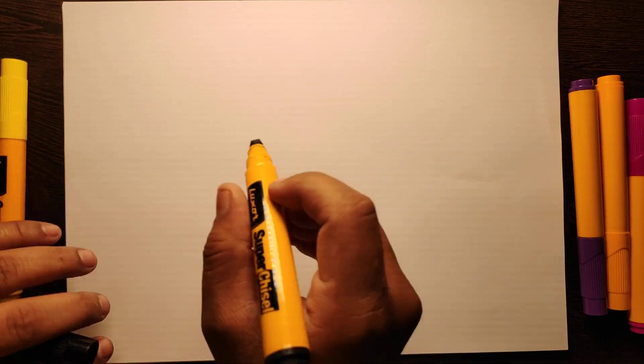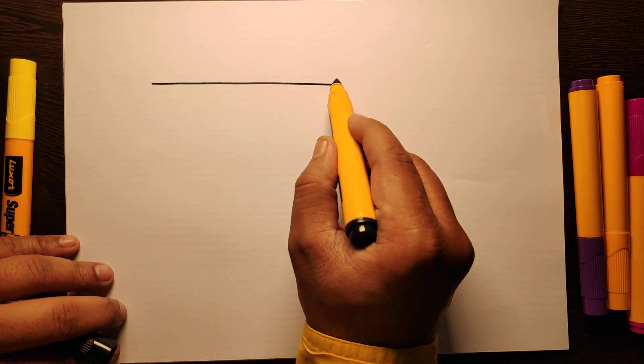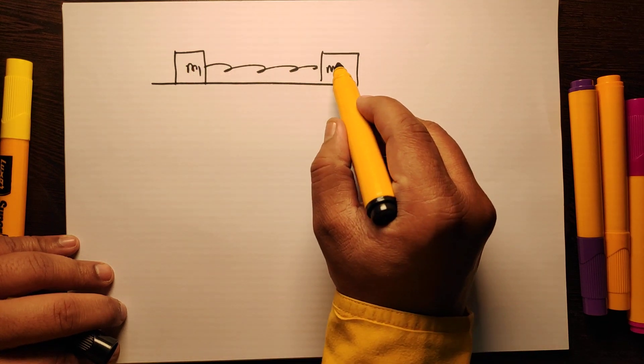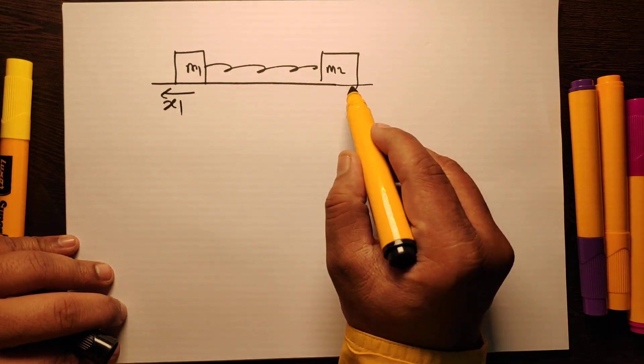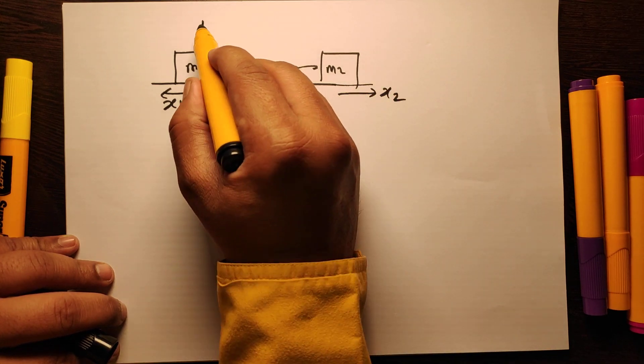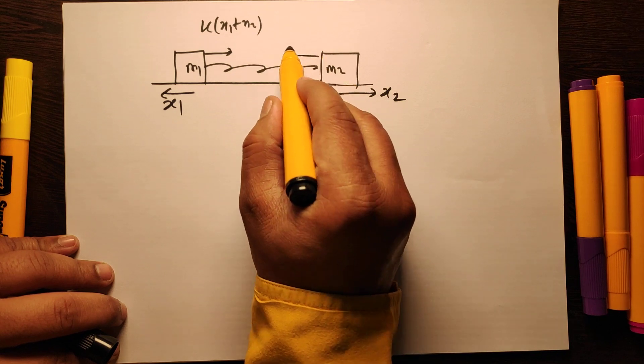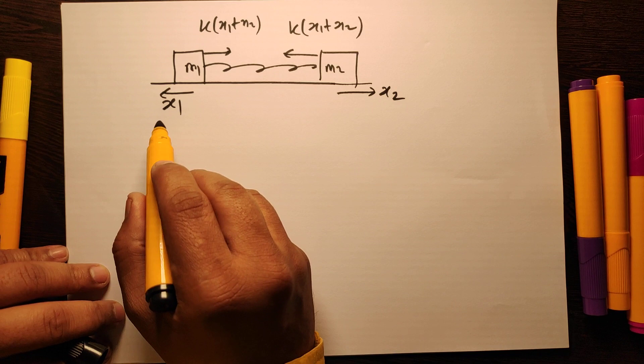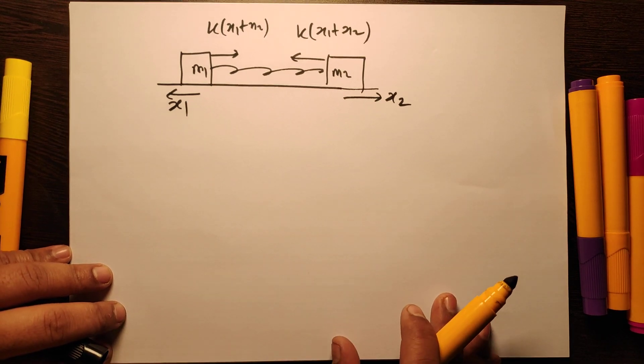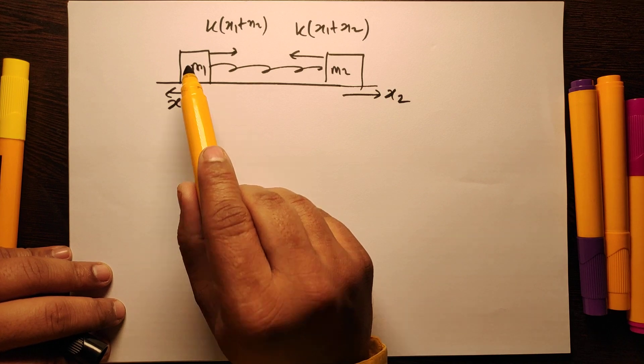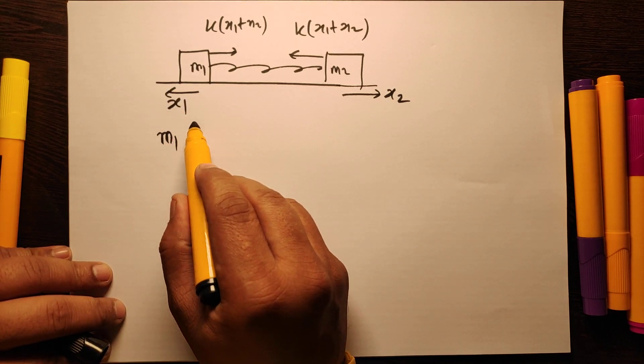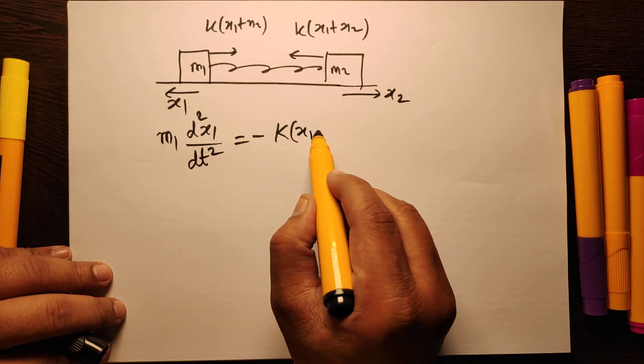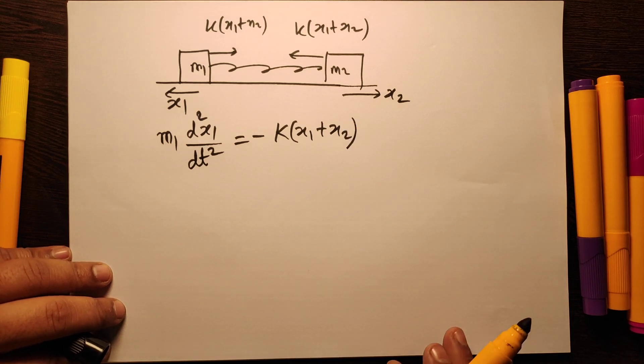So m1, m2, this is displacement x1 and this is displacement x2, and force k into x2 and force k into x1 plus x2 on both. I can write the equation - if I apply Newton's law on the left block, I can write m1 d²x1/dt² equal to minus k times x1 plus x1 plus x2.